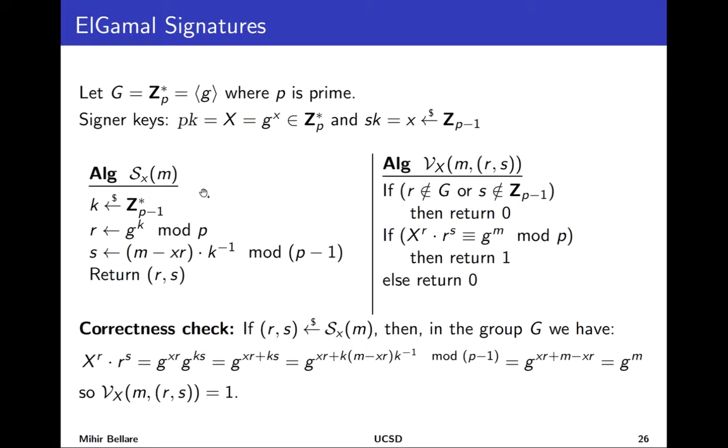Now even given this it's not necessarily clear how given a message I'm going to generate a pair (r,s) satisfying this equation. It turns out that we do it through randomization. So the signer given secret key little x starts by picking a random point k. This will be an exponent and it will be drawn from Z_p-1^*. It then raises g to the power k mod p to get r. So that's our first signature component which is a group element. Now it needs to find the second. So effectively it's going to try to solve this equation for s and it turns out the solution is like this. You take the message you subtract the secret key times r.